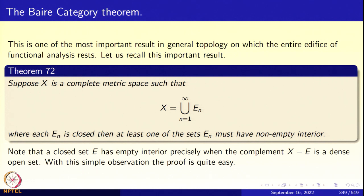The Hahn-Banach theorem is a theorem about convexity. So let us look at the Baire Category Theorem. If you take a complete metric space X and write it as a countable union of closed sets, then at least one of the sets must have non-empty interior. If a closed set has empty interior, you say it is nowhere dense. So a complete metric space cannot be written as a countable union of closed nowhere dense sets. That is the way you state the theorem without using any symbols.